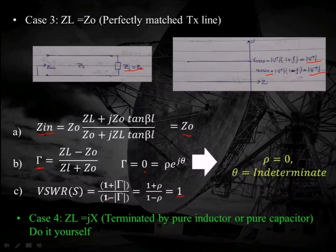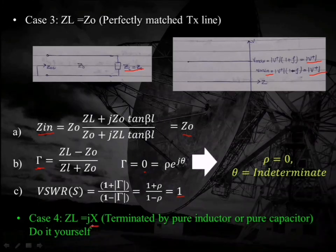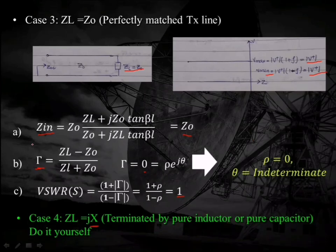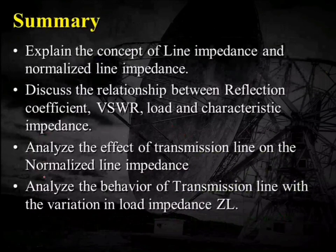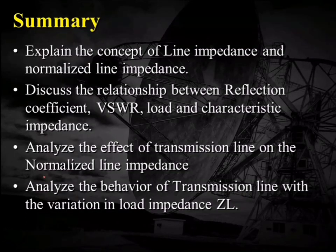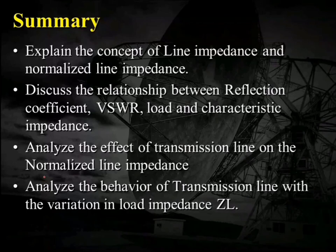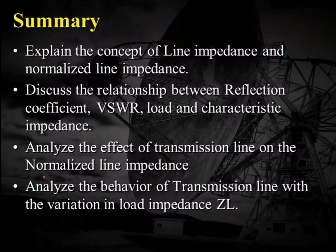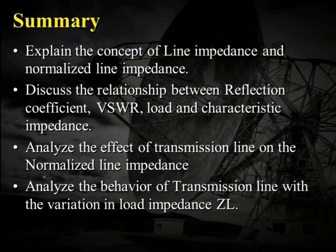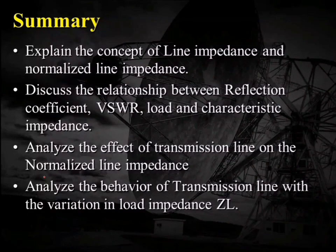In case four, I want you to try by yourself where the load impedance ZL equals jX, a purely imaginary capacitive or inductive value. Find the values of Z_in, reflection coefficient, and VSWR — that is an exercise for you. At the end of this lecture, we are able to explain line impedance and normalized line impedance, the relationship between reflection coefficient, VSWR, load and characteristic impedance, the effect of transmission line for lambda/2 and lambda/4 distances, and the behavior of the transmission line for ZL equal to zero, ZL equal to infinity, and ZL equal to Z0.